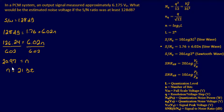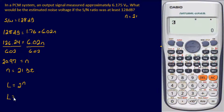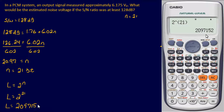Anytime you have a decimal with your bits, you always have to go up by one. Since the problem requires at least a signal-to-noise ratio of 128, we can't go down — we go up. So number of bits equals 21. With that, we can find the number of levels: L equals 2 to the 21, which gives us 2,097,152 levels.